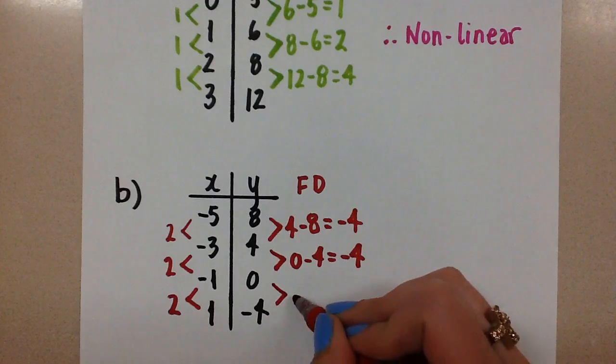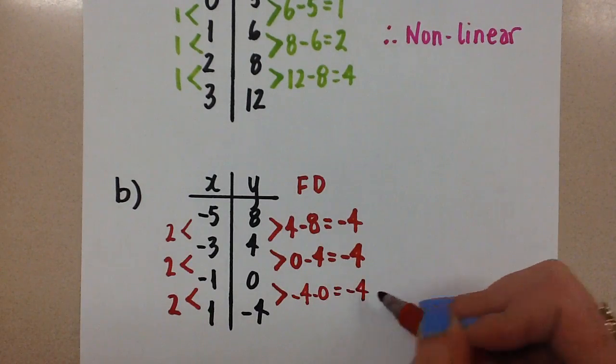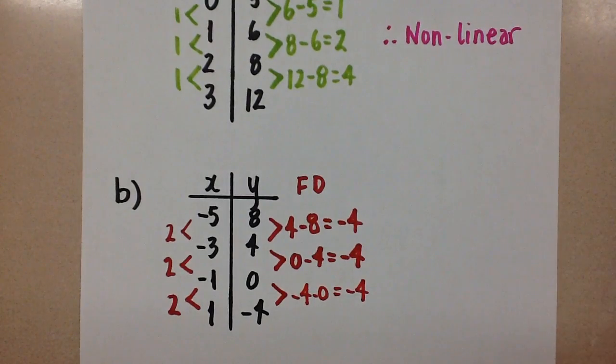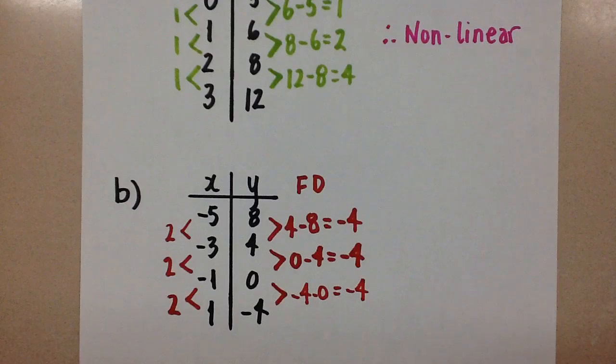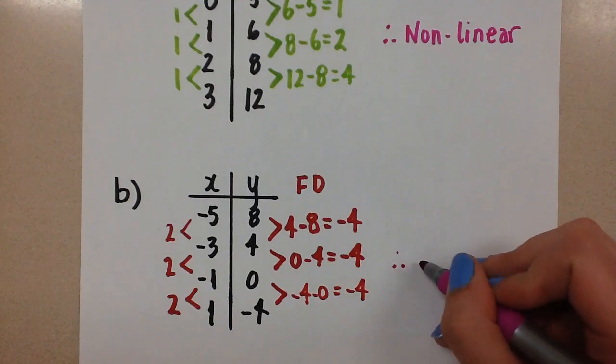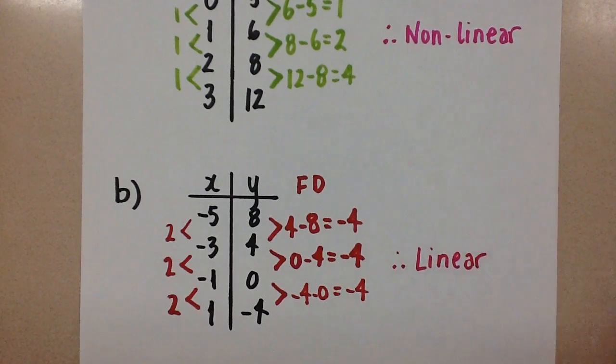And then the last set, negative 4 minus 0, is negative 4. So when we compare our first differences here, they are all equal. And if the first differences are all equal, then we can confirm that this is a linear relation.